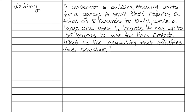I want to give you a couple of steps that will help you put this together. The first thing you want to do is select the minimum or maximum value given — which is usually just the biggest number they put out there. So in this case, it's 35 boards.